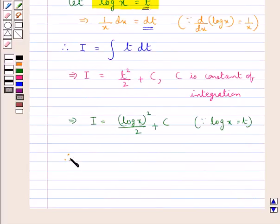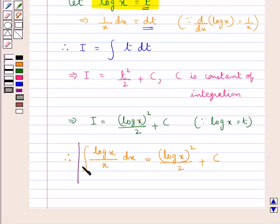So therefore, we have the given integral log x upon x dx is equal to log x the whole square upon 2 plus C, C being the constant of integration. So this is our final answer.